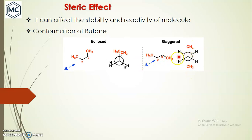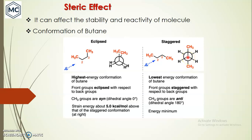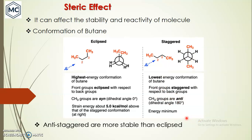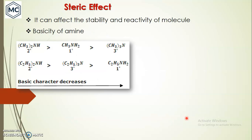In the staggered conformation the dihedral angle is 180 degrees. The eclipsed conformation has the highest energy — because the front methyl groups are eclipsed with respect to the back groups with a dihedral angle of zero — and is about 5 kcal/mol above the staggered conformation. The staggered anti conformation has the lowest energy, with methyl groups anti to each other. So anti-staggered is the most stable conformation. This is another application of steric effect.